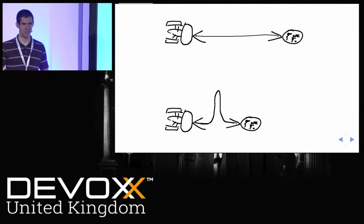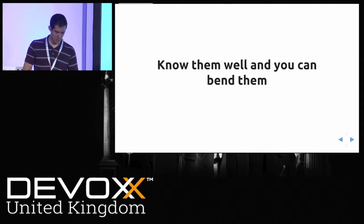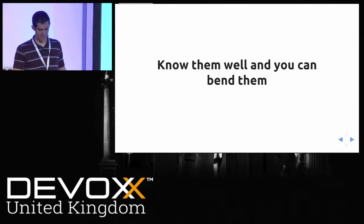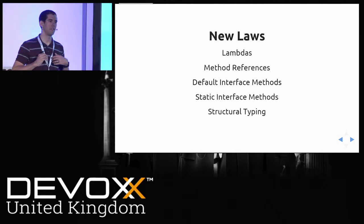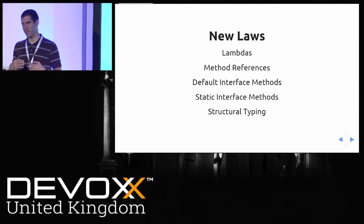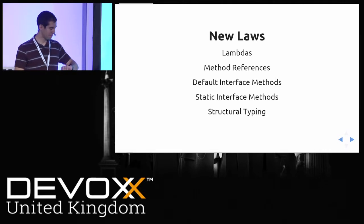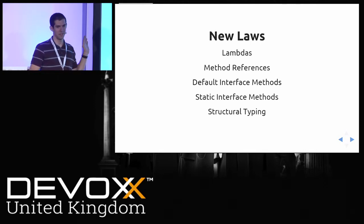Java 8 gives us a whole load of new features to help us work around things we might not think are possible. We've talked about lambdas already. We've also got method references, default interface methods, and static methods on interfaces. I'm going to be showing examples that make use of all of those.